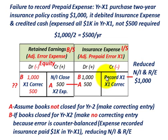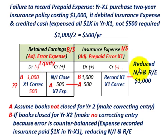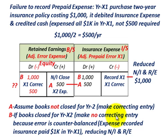For case B — if the books are closed for year X2 — you make no correcting entry because the error is counterbalanced. The $1,000 insurance expense was recorded in X1, reducing net income and retained earnings. When we come to year X2, the $500 that would normally be expensed in X2 is no longer there, so the error naturally offsets.